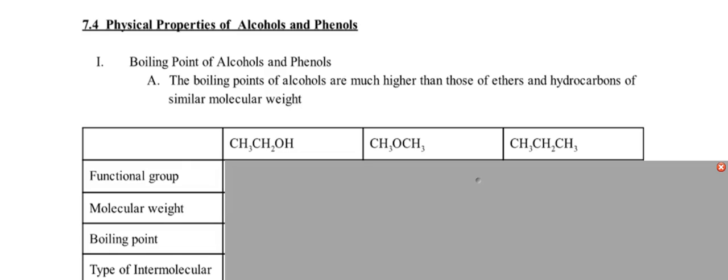So we're going back and looking at properties. What do we think of with properties? We're thinking of what kind of intermolecular bonding occurs here. That will determine our boiling point and our viscosity and things that we talked about earlier. The boiling points of alcohols are much higher than those of ethers and hydrocarbons of similar molecular weight.